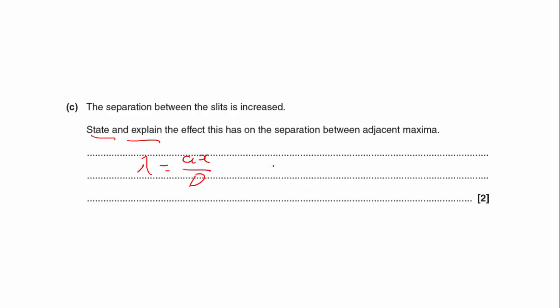The slit separation is A, I think. I always get A and X mixed around the wrong way. But if we rearrange that, we can say that A is equal to lambda D over X. What we can see is that A is proportional to 1 over X. So if the slit separation is increased, which is A, then we can see that X would decrease. So X decreases.